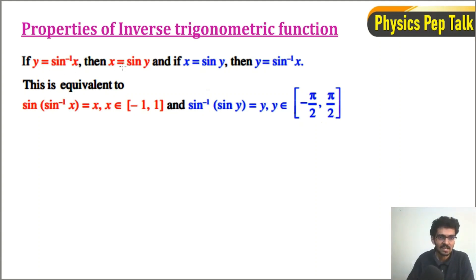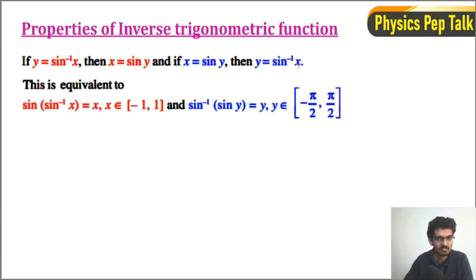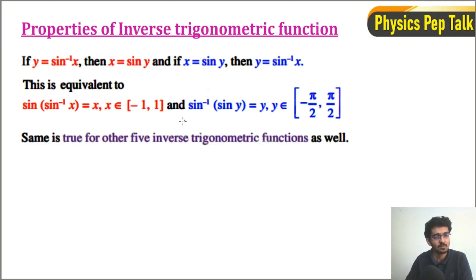Now observe: x is equal to sin of y. Since y is equal to sin inverse of x, substituting sin inverse of x gives x for x belonging to the closed interval minus 1 to 1. Therefore, y is equal to sin inverse of x, and substituting x equals sin of y gives y, for y belonging to the closed interval minus pi by 2 to pi by 2. This is the range. This property is applicable to all five inverse trigonometric functions.